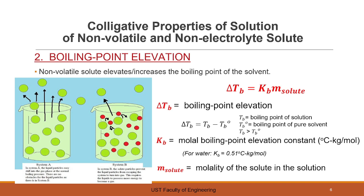This is related in the formula. Delta Tb is the boiling point elevation, where delta means the change. It is equal to the molal boiling point elevation constant multiplied by the molality of the solute in the solution. The change in boiling point is equal to the boiling point of the solution minus the boiling point of the pure solvent, though usually we are only looking for the value of delta Tb itself.